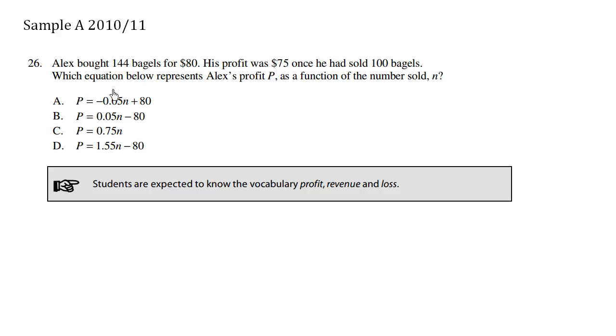Alex bought 144 bagels for $80. His profit was $75 once he had sold 100 bagels. Which equation below represents Alex's profit P as a function of the number sold N?